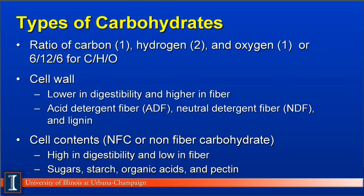When we look at dairy cattle, there are two classifications of carbohydrates. One we call the cell wall. The cell wall is lower in digestibility and high in fiber, and increases as plants mature. In the cell wall, you will find such things as acid detergent fiber, also referred to as ADF, and neutral detergent fiber, or NDF, and lignin.